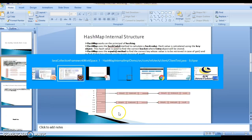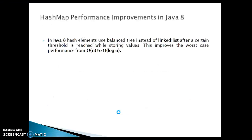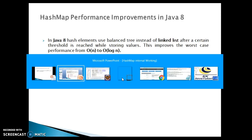When you talk about this scenario, Java 8 came up with an important enhancement. In Java 8, HashMap elements use a balanced tree instead of a linked list after a certain threshold is reached while storing values in a bucket. This improves the worst-case performance from O(n) to O(log n). Internally, if you put a lot of elements into the same bucket forming a linked list, after reaching a threshold limit that linked list is converted into a balanced tree, changing the complexity from O(n) to O(log n).